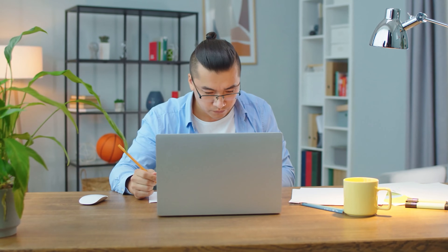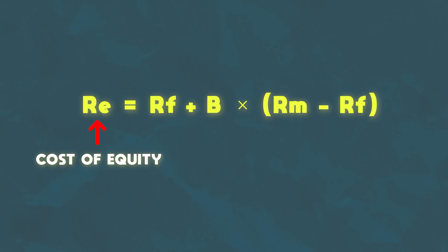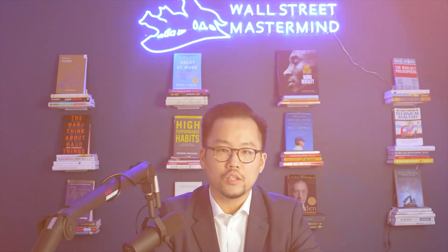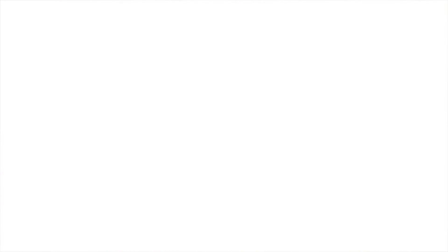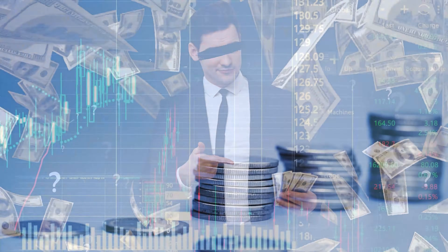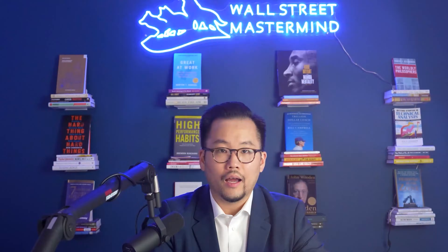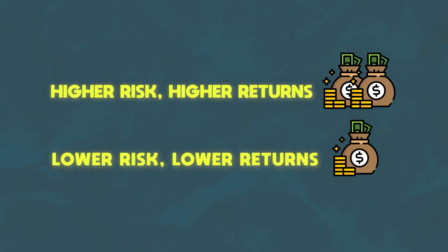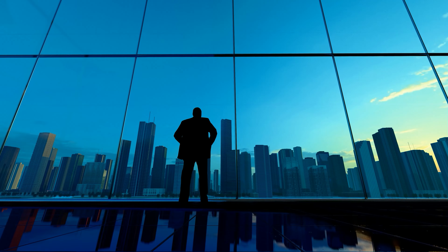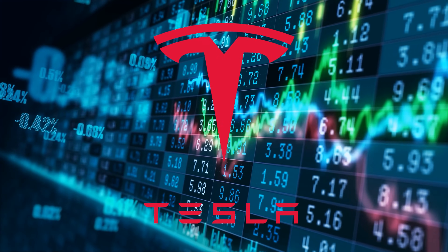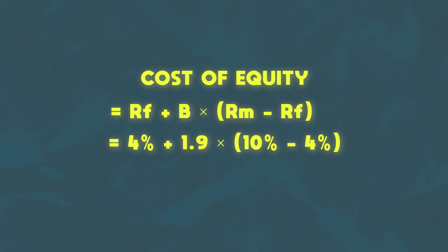Now that we understand each of these components, it's easy to see why the cost of equity formula is the way it is: cost of equity equals the risk-free rate plus beta times the market risk premium. The expected return you would get from investing in a stock equals the market risk premium multiplied by the stock's volatility, plus what you'd make on a risk-free investment. The higher risk principle is captured by beta — a higher-risk stock like Tesla will be more volatile, which is why it has a beta of 1.9. Assuming a risk-free rate of 4% and a market risk premium of 6%, Tesla's cost of equity is 4% + (1.9 × 6%) = 15.4%.